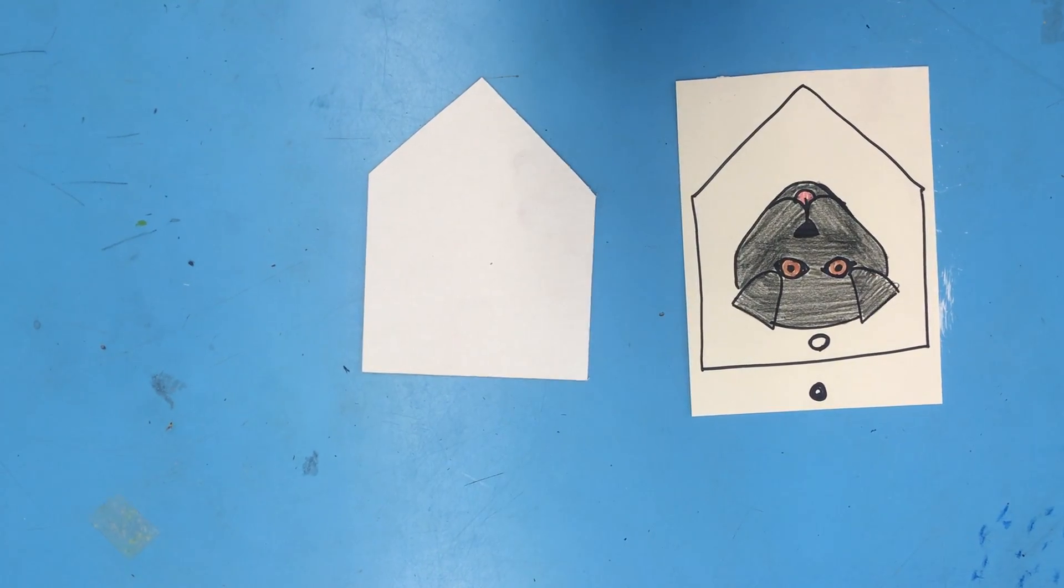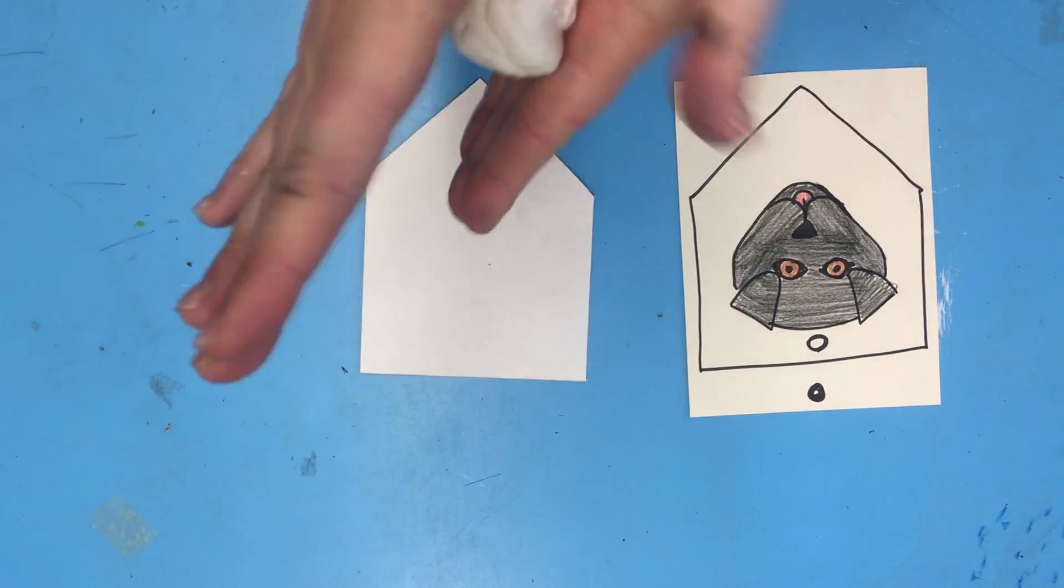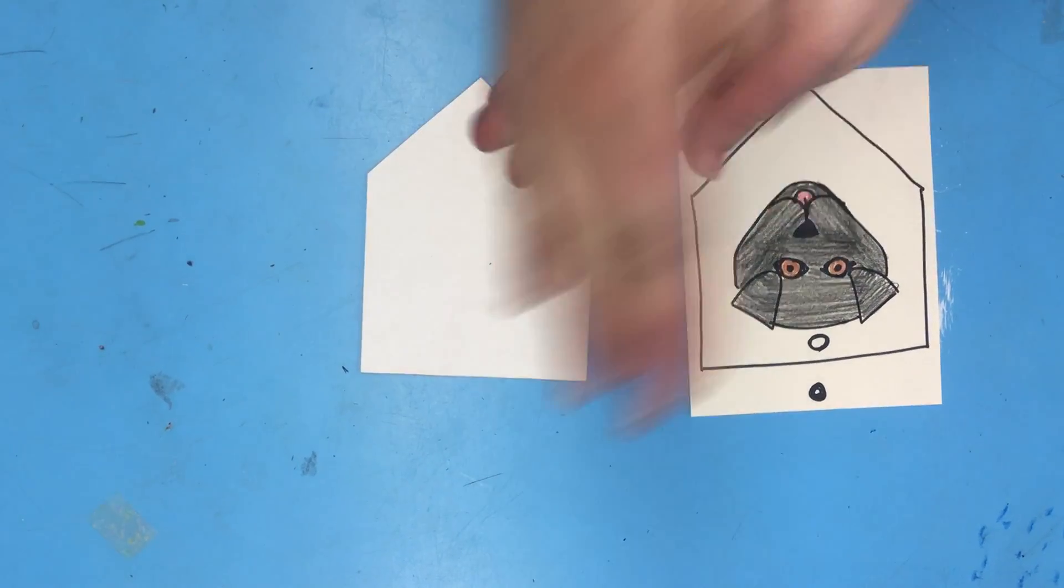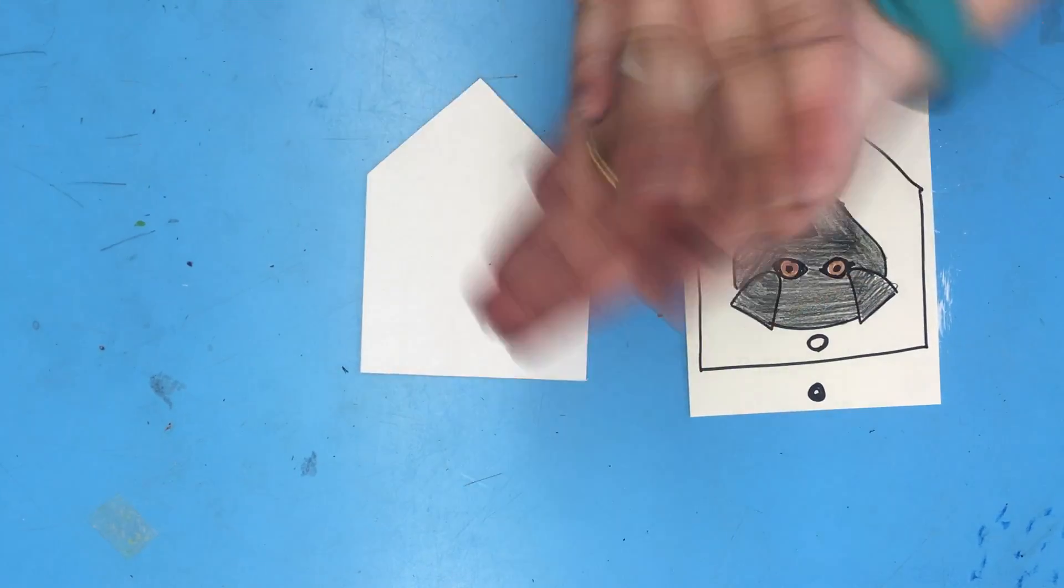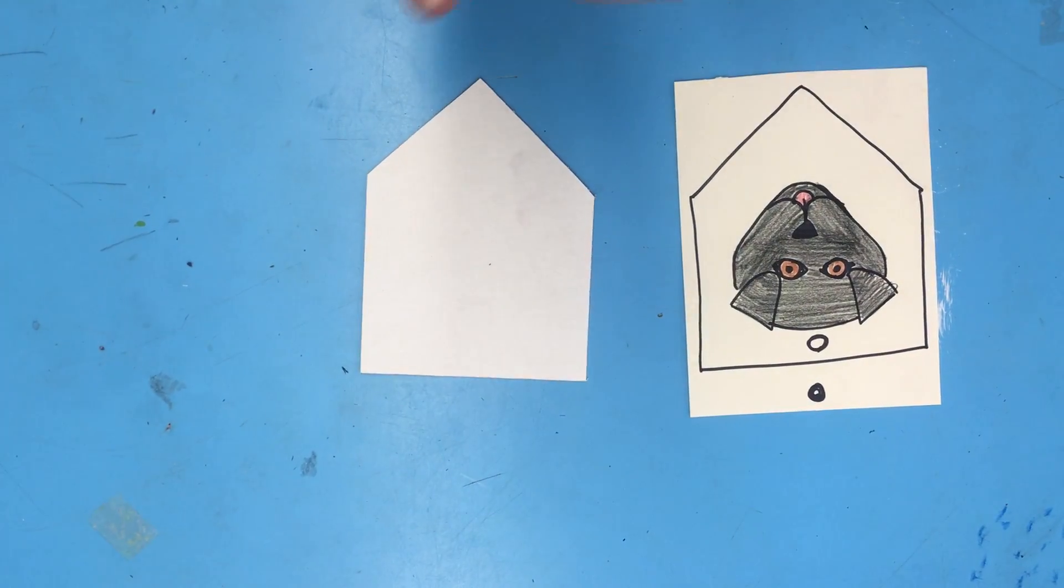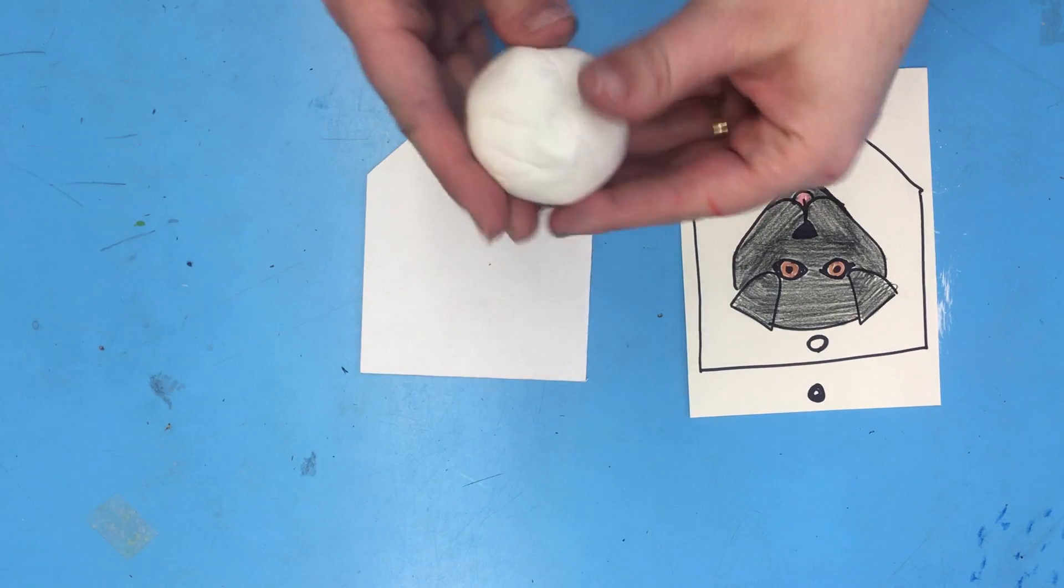With the first piece, we're not really going to play with it that much. What I want you to do is roll it into a ball. Move your two hands in little circles. You roll it into a ball. And it's okay if it gets a little dirty because we're going to paint these.